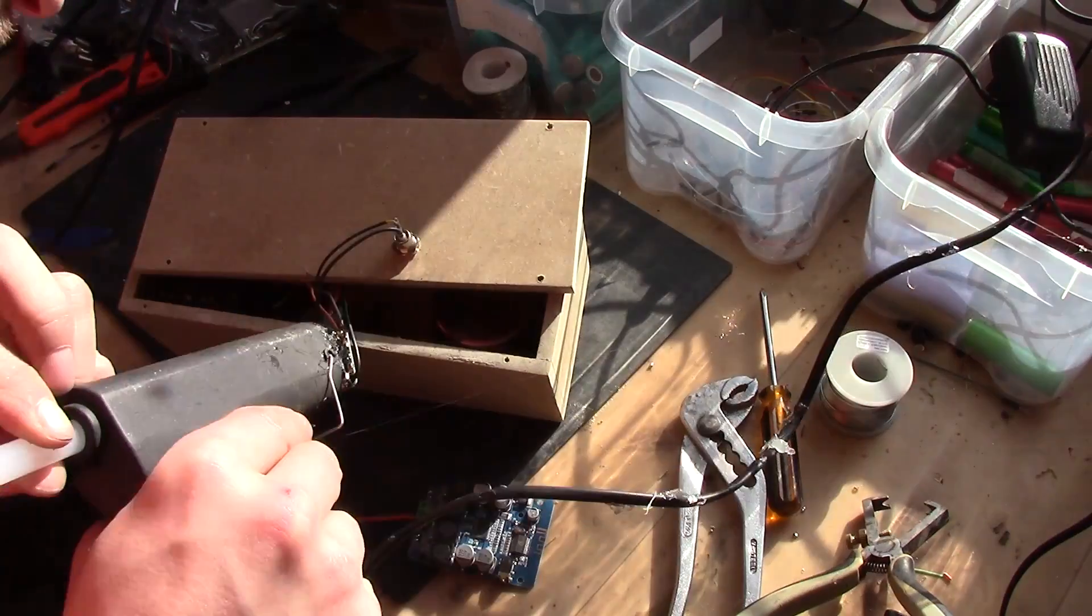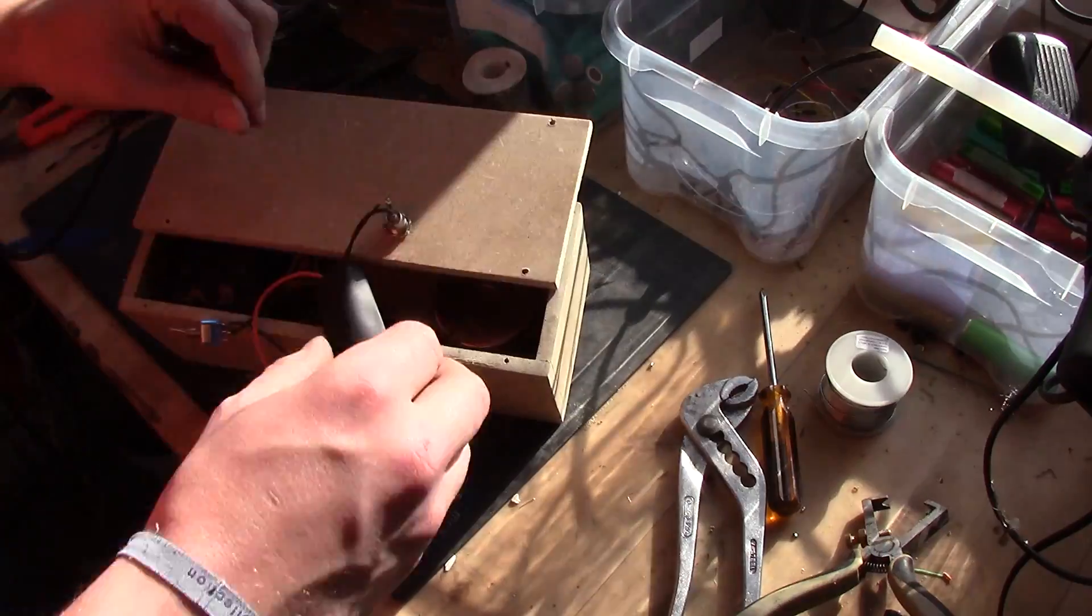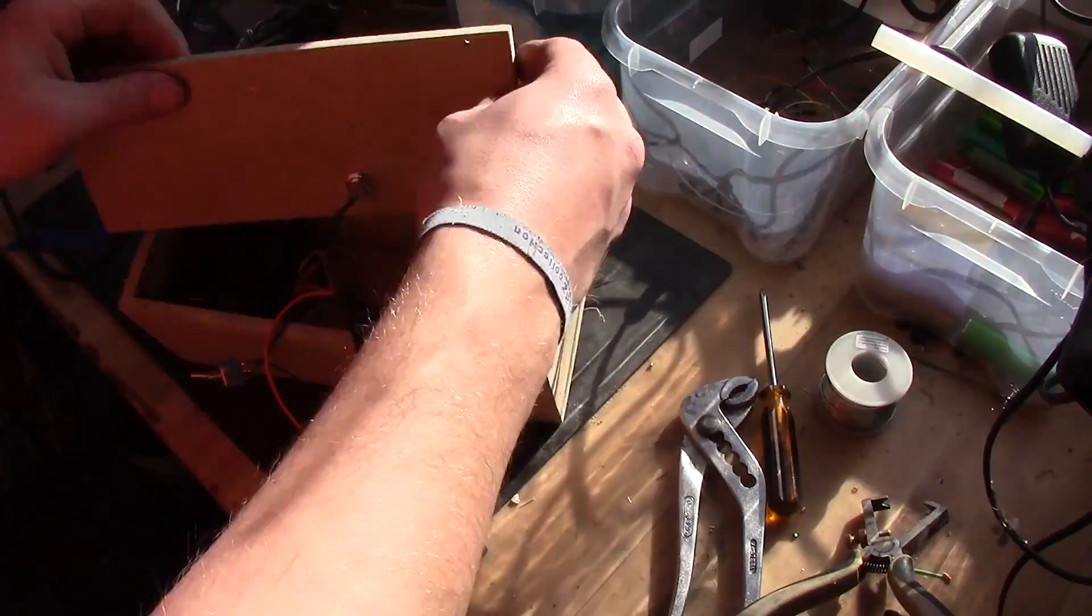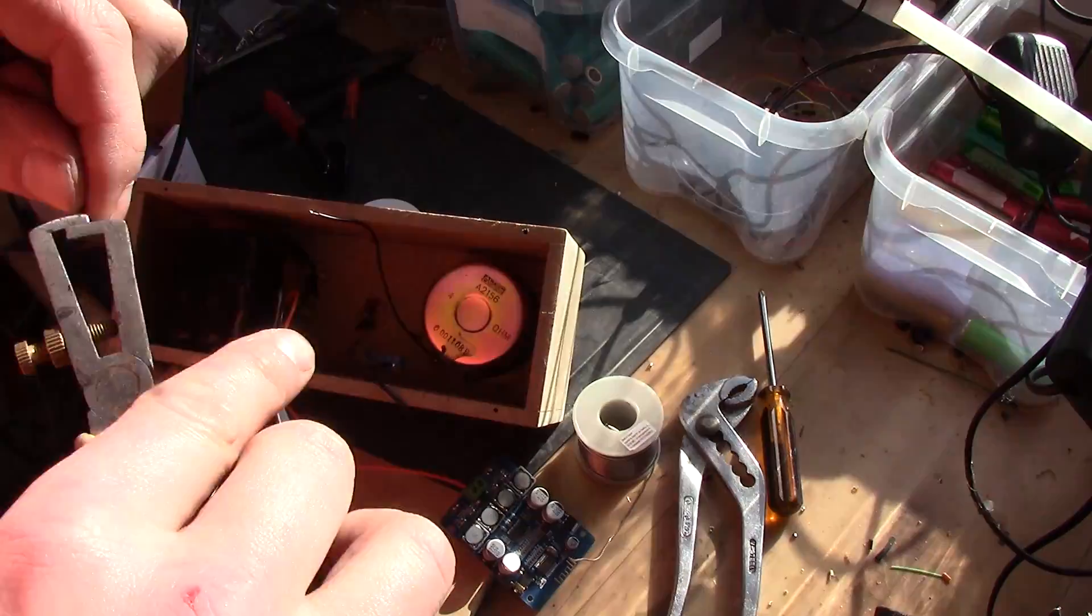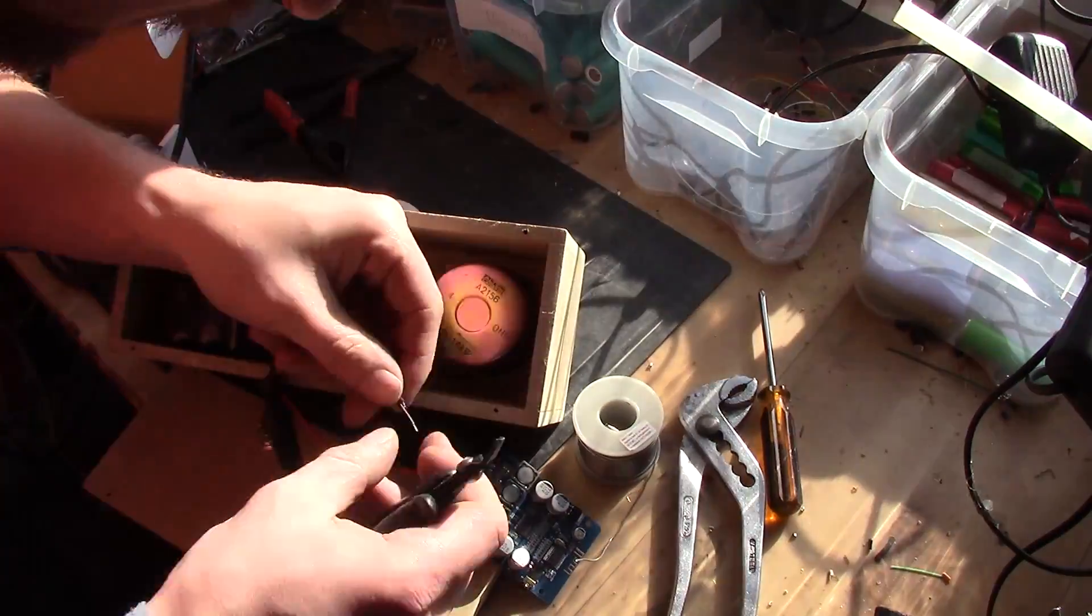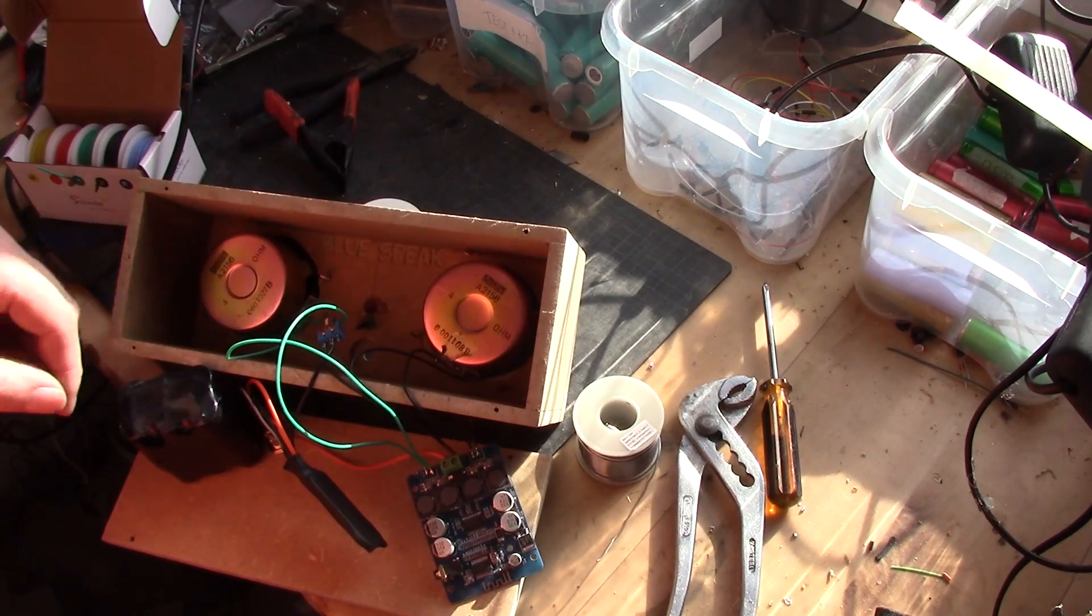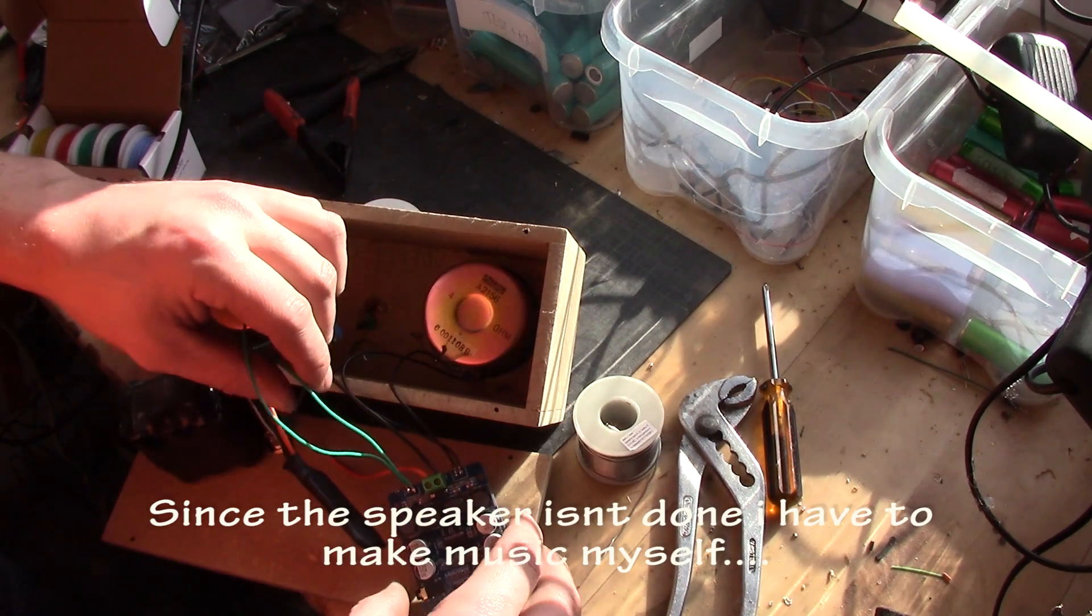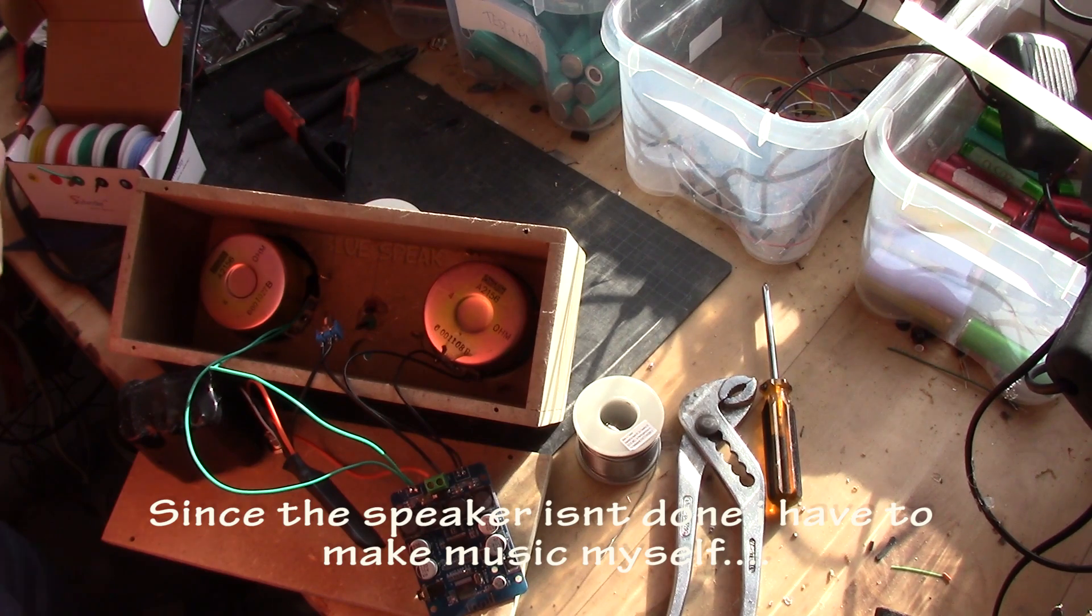Soldering everything together, the BMS and the charge port. Shrink wraps around that as well so I make sure I don't have anything that could short circuit. And it's just simple about adding it up on the correct ports on the BMS.